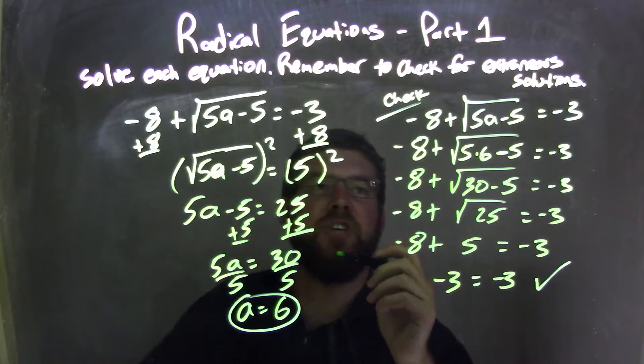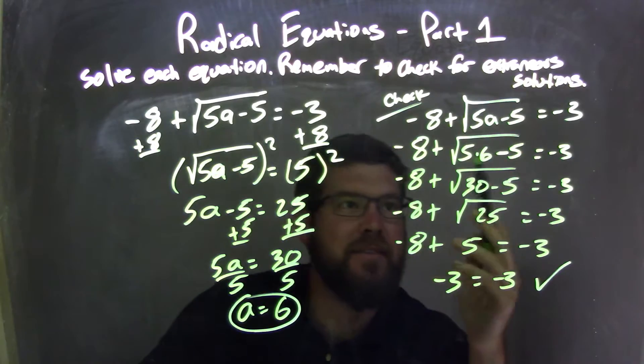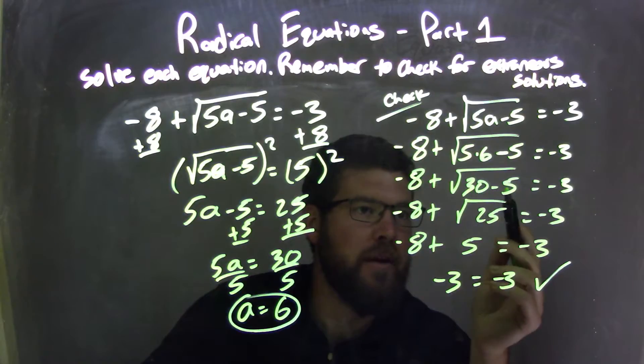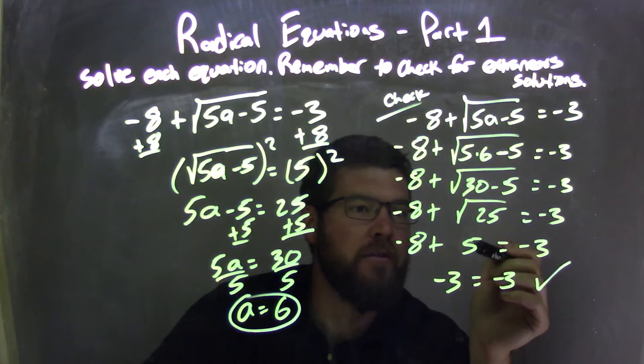From there, I had to check. I rewrote my equation and plugged 6 in for a. 5 times 6 was 30. I then subtracted: 30 minus 5 is 25. Square root of 25 is 5. Then negative 8 plus 5 was negative 3.